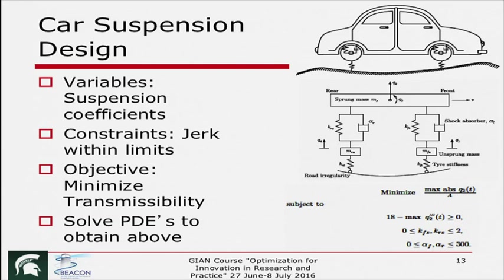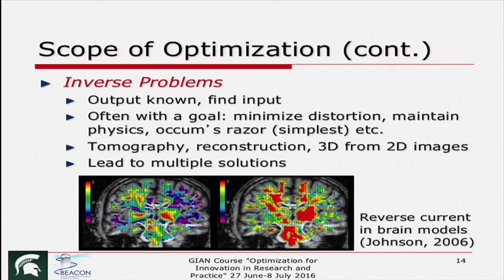In manufacturing, if you are trying to find the best operation of a lathe or a milling machine, there are a lot of parameters like feed, speed, and rotation. You want to design those things so that you have a very smooth cut or cut at the minimum possible time — these can all be your objective functions. Switching gears a little bit, there are lots of problems in practice which are inverse type. There is a whole field called inverse engineering or inverse problem solving.